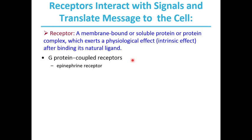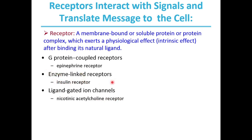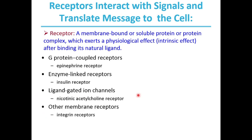What are the different kinds of receptors? G protein coupled receptors — also called epinephrine receptors — are one example. Enzyme-linked receptors, such as insulin receptors, have enzymatic activity. Ligand-gated ion channels, such as nicotinic acetylcholine receptors, are classic examples. Other types include membrane receptors such as integrin receptors, and nuclear receptors, also called steroid receptors. These are commonly involved receptors in signal transduction pathways.